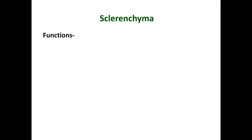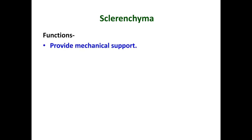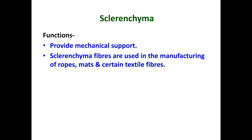Sclerenchyma is the chief mechanical tissue, providing mechanical strength and enabling the plant to resist various strains. Sclerenchyma fibers are used in manufacturing ropes, mats, and certain textile fibers. Jute and coir are obtained from thick bundles of sclerenchyma fibers. This is all about the supportive tissues of plants — hope this topic is now clear to you.